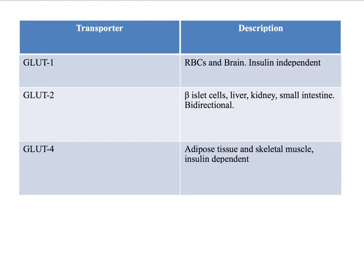Glucose 2 transporters are found in beta islet cells, liver, kidney, and the small intestine. These transporters are bi-directional, meaning glucose can not only go into the cell but glucose can go out of the cell. The liver is the primary area where gluconeogenesis occurs, but it can also occur in the kidney and small intestine. So it's important for these organs to have bi-directional glucose transporters because gluconeogenesis is occurring and that glucose needs to be secreted into the blood.